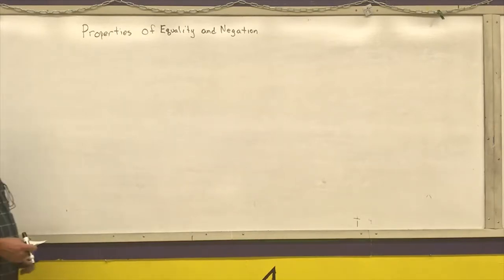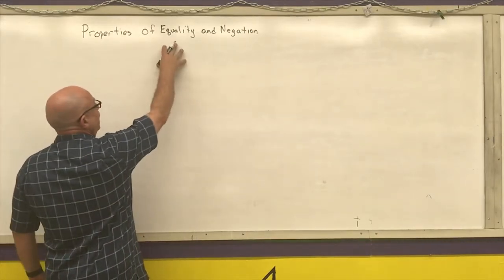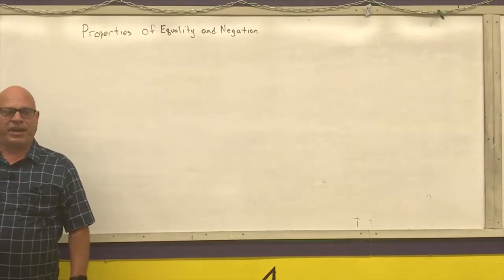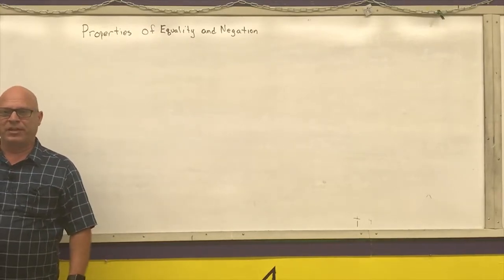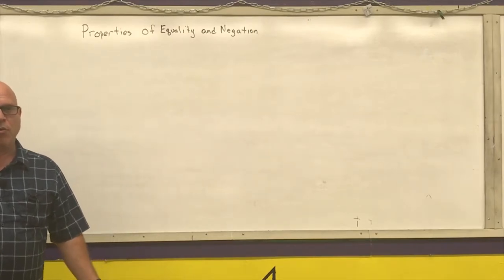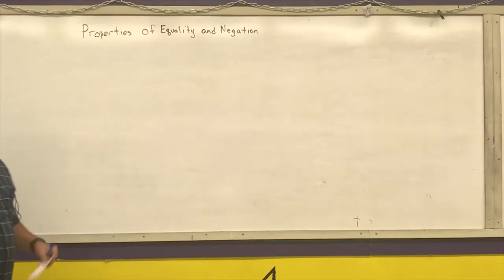And we're going to discuss the properties of equality and negation. Basically, what the properties of equality state is that I can do the regular four arithmetic operations to two things that are equal as long as I do the same thing. I'm going to write them a couple different ways.